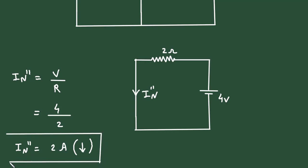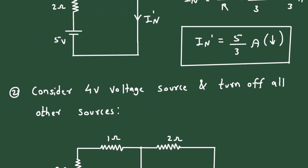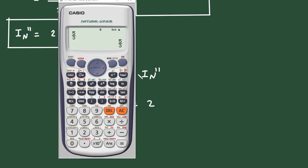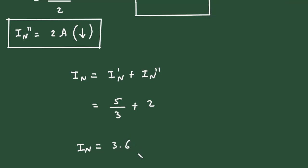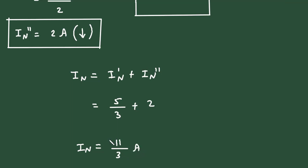Now we can find the value of IN. Since IN double prime and IN prime are both directed downward, we add them. IN equals IN prime plus IN double prime, which is 5 by 3 plus 2, giving 3.6 ampere, or in fraction form, 11 by 3 ampere.